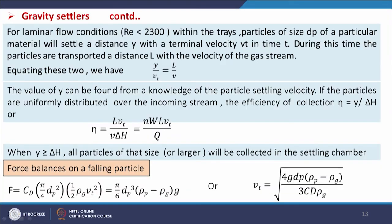We are assuming that the flow is laminar, but in reality it may not be laminar and it is very difficult to achieve laminar conditions, so these expressions will not hold perfectly and some modification is needed. For laminar flow conditions within the trays, particles of size dp will settle a distance y with terminal velocity vt in time t. During this time, particles are transported a distance L with the velocity of the gas stream. So y/vt = L/v, which is similar to the expression we discussed previously with capital H.